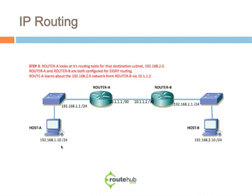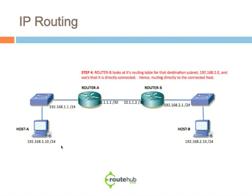Next, router A will look at its routing table — just like host A did — for the destination subnet 192.168.2.0. Router A and router B are both configured for a routing protocol called EIGRP. Router A is learning about the 192.168.2.0 network from router B, so its next hop will be 10.1.1.2, which belongs to router B. Moving along, router B then looks at its routing table for that destination subnet and sees that it is directly connected — meaning there is an interface on that router configured for that network. Hence, routing delivers directly to host B. That's what routing is really doing from point A to point B.